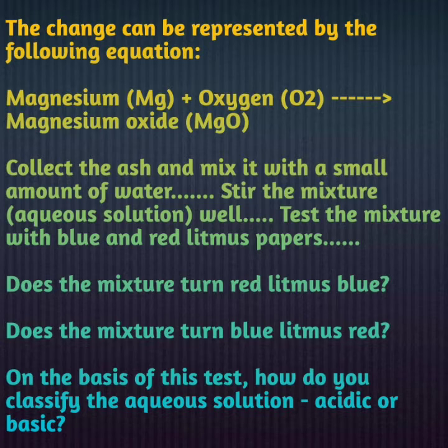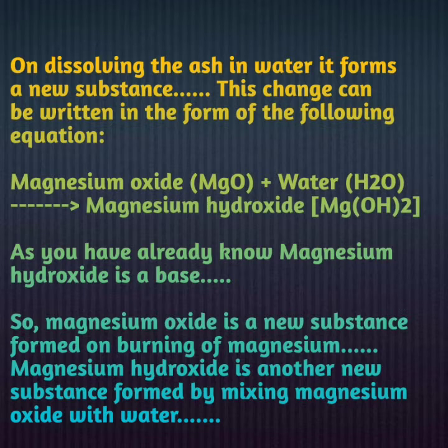Magnesium oxide को जब आपने water में मिलाया, तो वो magnesium hydroxide बन जाएगा. We have to test whether magnesium hydroxide is acidic in nature or basic in nature. Magnesium hydroxide is basic in nature, means it will turn red litmus blue. On dissolving the ash in water it forms a new substance — the equation is: magnesium oxide + water → magnesium hydroxide. As you already know, magnesium hydroxide is a base, so magnesium oxide is a new substance formed on burning of magnesium.